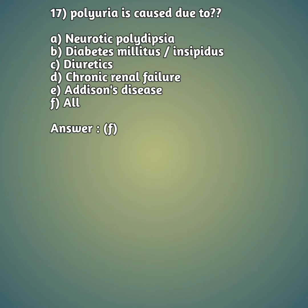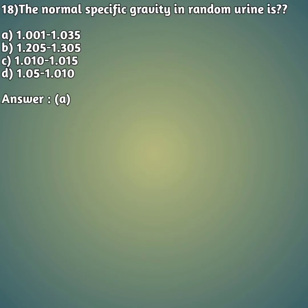Question 17: Polyuria is caused due to — option A: neurotic polydipsia, option B: diabetes mellitus and insipidus, option C: diuretics, option D: chronic renal failure, option E: Addison's disease, option F: all. Polyuria can be caused by all these disorders, so the right answer is option F, all.